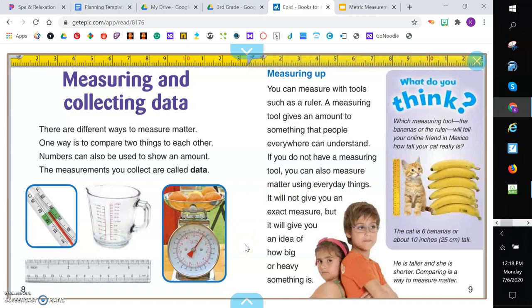Measuring and collecting data. There are different ways to measure matter. One way is to compare two things to each other. Numbers can also be used to show an amount. The measurements you collect are called data.